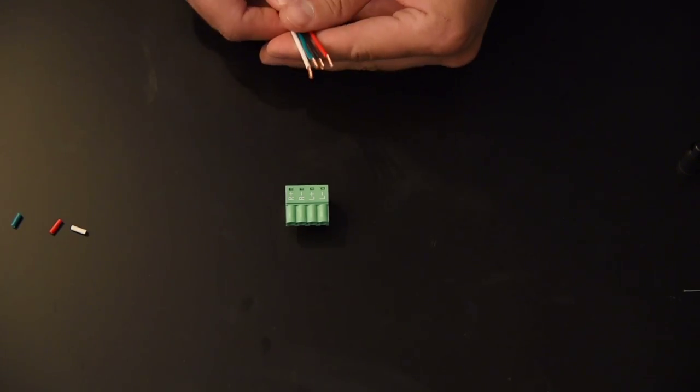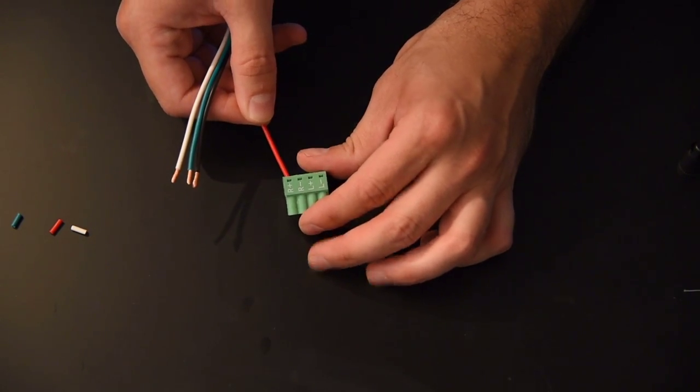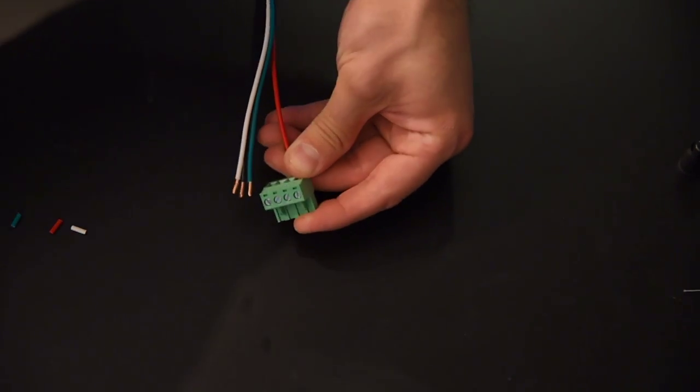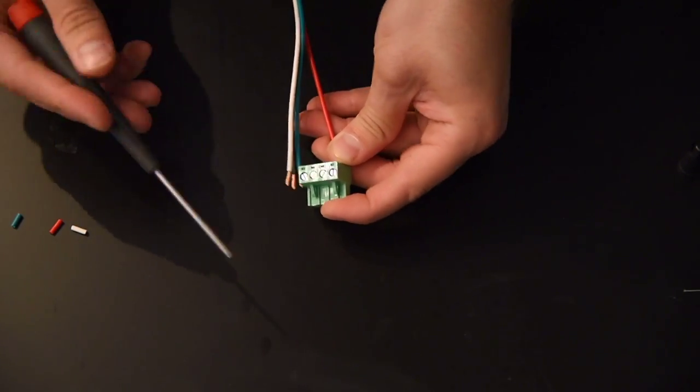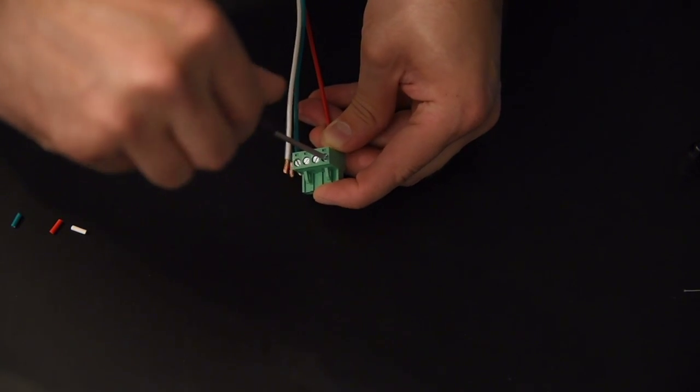So what I want to do is I want to take the red and put it into the right positive. I'm going to take my small screwdriver, twist it into here, and tighten it.